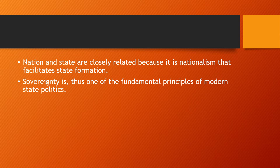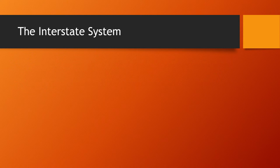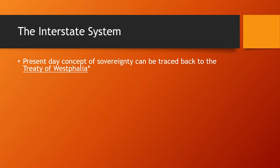Nations and states are closely related because it is nationalism that facilitates state formation. Sovereignty is thus one of the fundamental principles of modern state politics. The Treaty of Westphalia was a set of agreements signed in 1648 to end the Thirty Years' War between the major continental powers of Europe. After a brutal religious war between Catholics and Protestants, the Holy Roman Empire, Spain, France, Sweden, and the Dutch Republic designed a system recognizing that each signatory exercised complete control over their domestic affairs and swore not to meddle in each other's affairs.